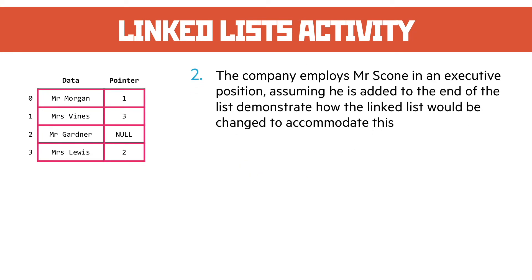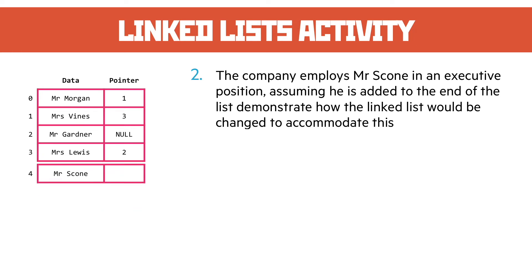Part 2: the company employs Mr. Scone in an executive position. Assuming he is added to the end of the list, demonstrate how the linked list would be changed to accommodate this. The linked list behind the scenes is an array, so we add that to the bottom as index 4 — Mr. Scone. As he's been added to the end and comes after Mr. Gardner, we'd update the pointer of Mr. Gardner to point to Mr. Scone, so that would become 4. And as Mr. Scone is now the end of the list, we update his pointer to become null.